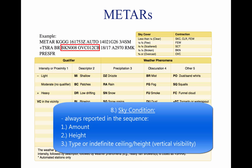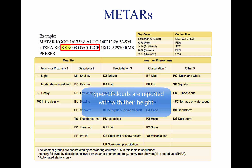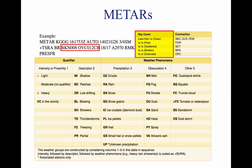Eight, sky condition — BKN008 OVC012CB. Always reported in the sequence of amount, height, and type or indefinite ceiling height. The heights of the cloud bases are reported with a three-digit number in hundreds of feet AGL. The types of clouds, specifically towering cumulus (TCU) or cumulonimbus (CB) clouds, are reported with their height. Contractions are used to describe the amount of cloud coverage and obscuring phenomena. The amount of sky coverage is reported in eighths of the sky from horizon to horizon.